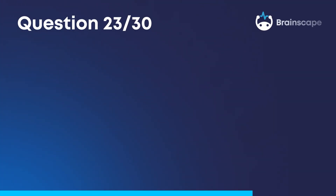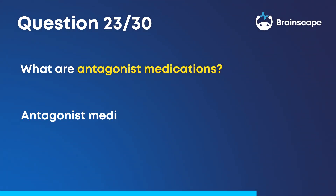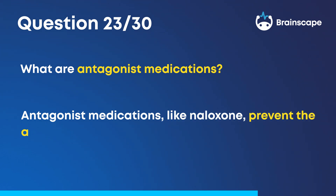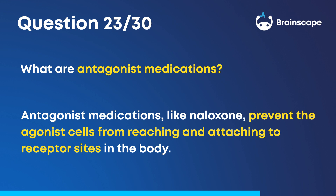Question 23. What are antagonist medications? Antagonist medications, like naloxone, prevent the agonist cells from reaching and attaching to receptor sites in the body.